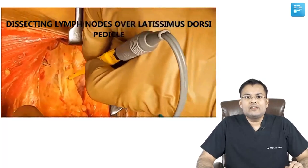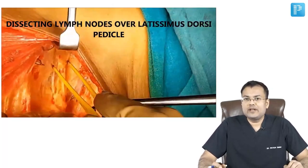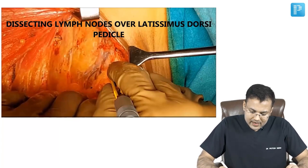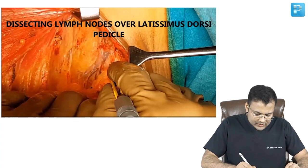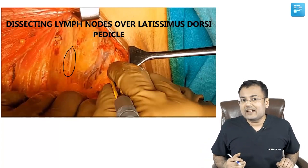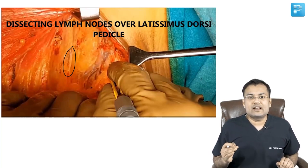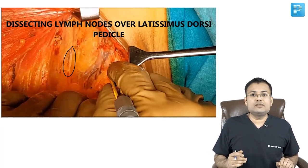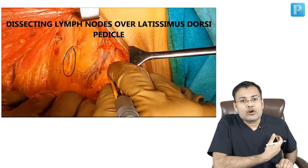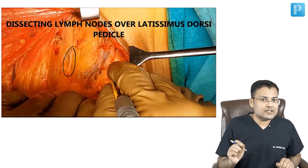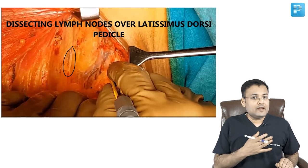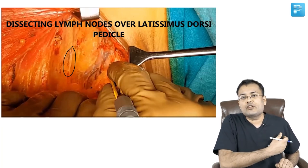After that, dissection should be done over the thoracodorsal pedicle. You can see the thoracodorsal pedicle clearly and dissection being done over it. The thoracodorsal nerve supplies the latissimus dorsi. There is another nerve over the lateral aspect of the chest wall — this is the nerve to serratus anterior, also known as the long thoracic nerve. These are two important nerves which should be identified and preserved. The third nerve to be preserved is the intercostobrachial nerve.